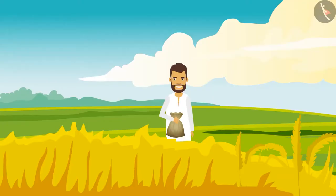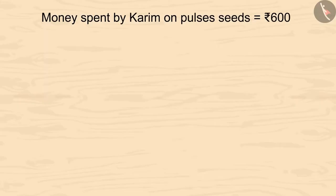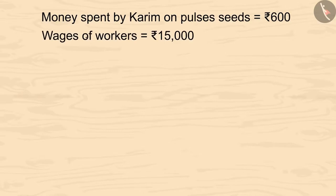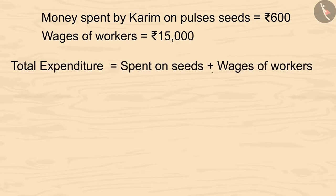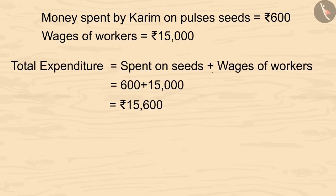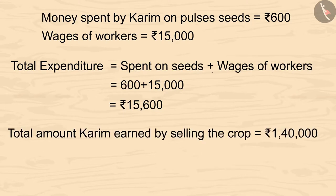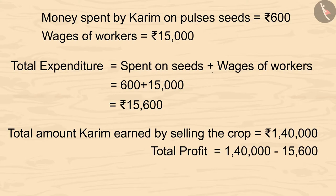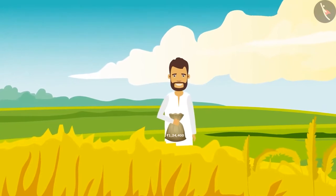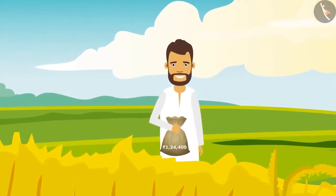Now let's see how much profit Karim has gained. Kids, you can pause the video and calculate it. He bought pulses seeds for 600 rupees and gave 15 thousand rupees to the workers. Adding both amounts, we get 15 thousand and 600 rupees in total expenses. Karim got 1 lakh 40 thousand rupees on selling the crop. If we subtract 15 thousand 600 from 1 lakh 40 thousand, we are left with 1 lakh 24 thousand and 400 rupees. So kids, Karim has clearly made a profit of 1 lakh 24 thousand and 400 rupees.